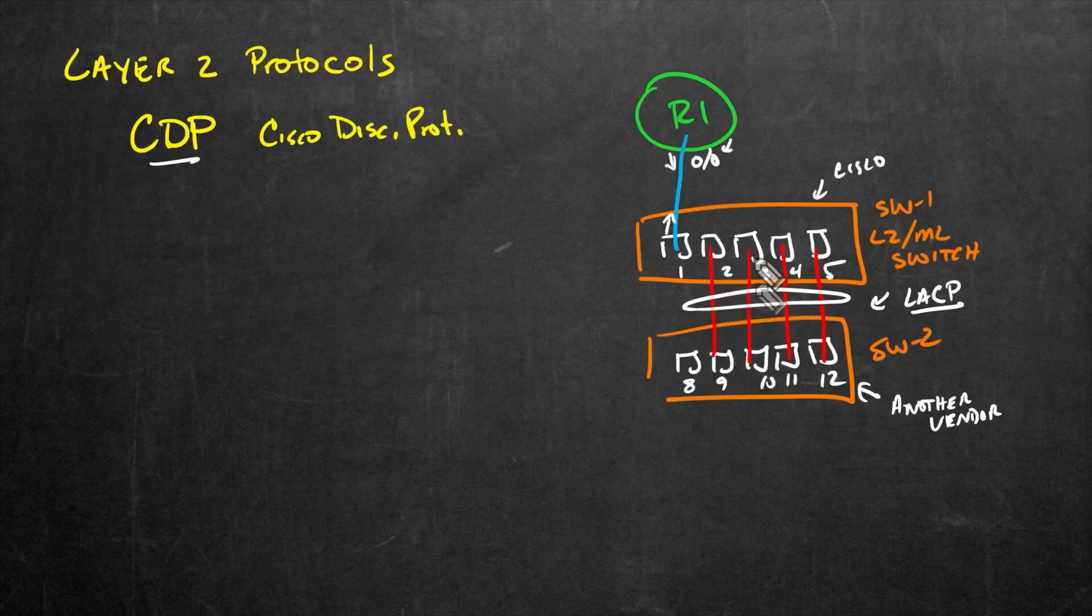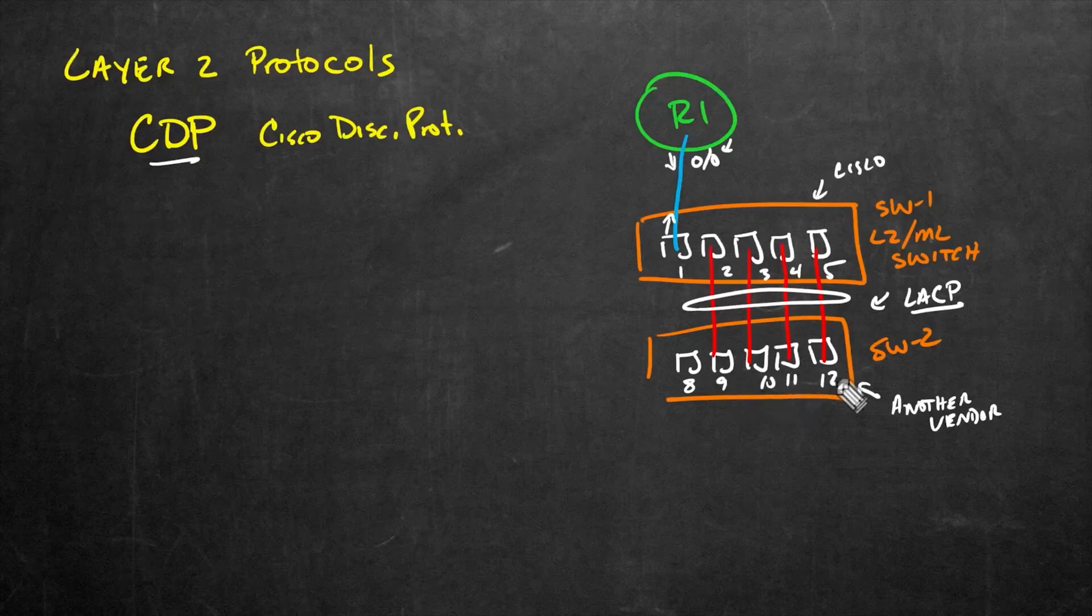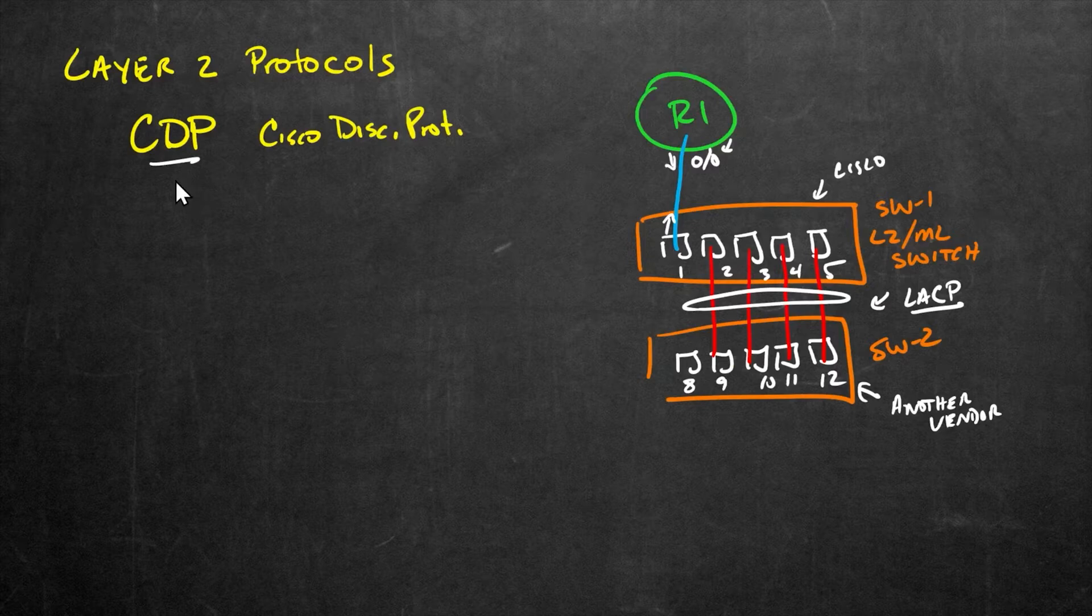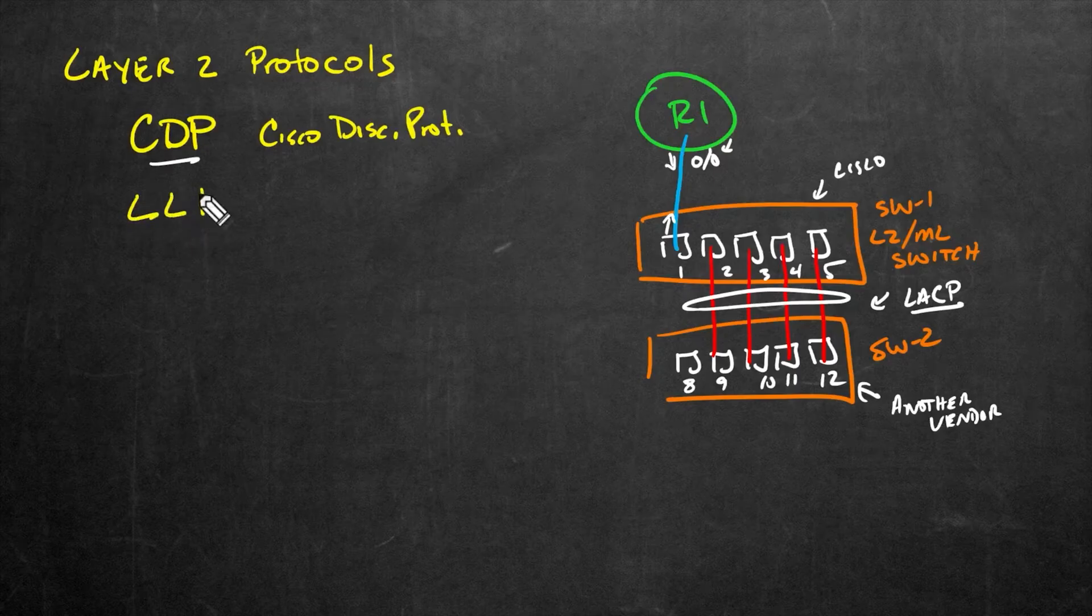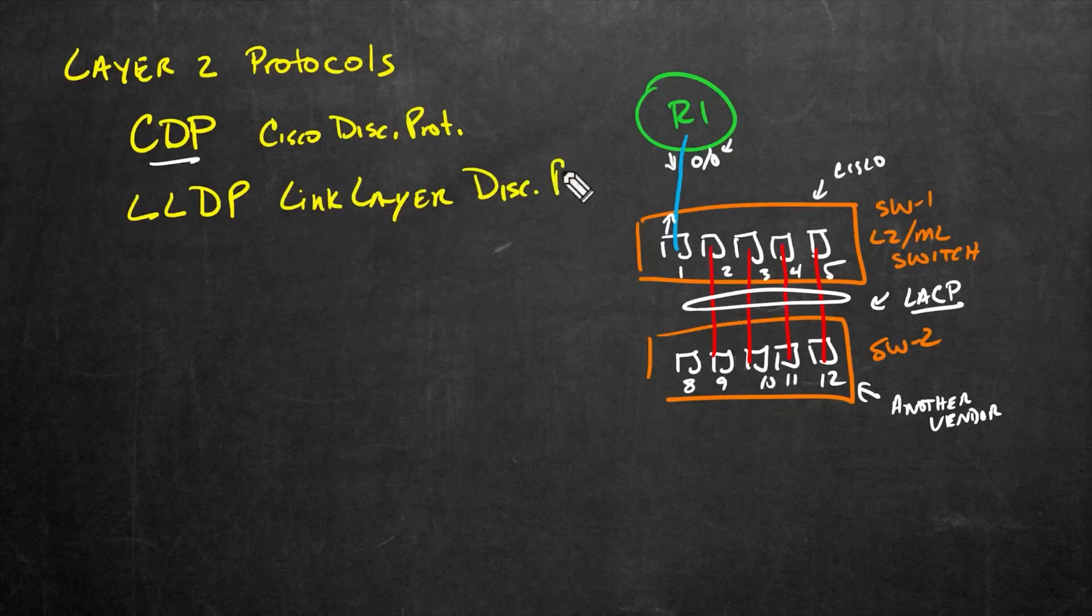And so we don't have, with CDP, the option of dynamically learning that our ports two, three, four, and five are connected down here to the respective ports nine, ten, eleven, twelve, and also learn the capabilities of the other side using CDP. And that's why we have another industry standard option for a layer two discovery protocol. And that is LLDP.